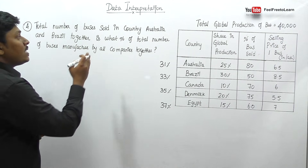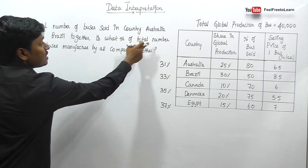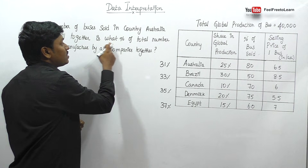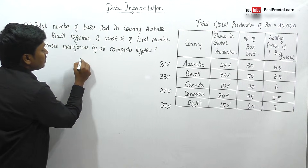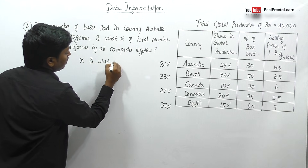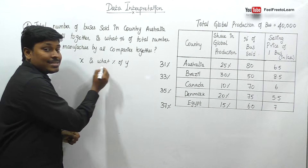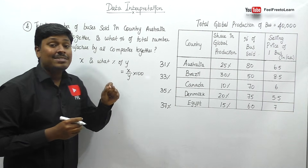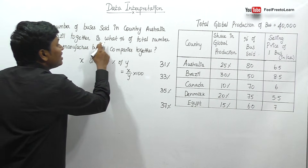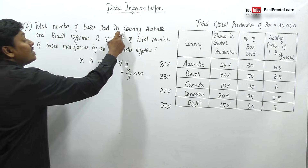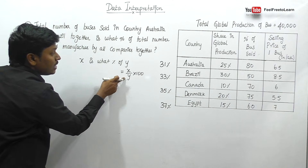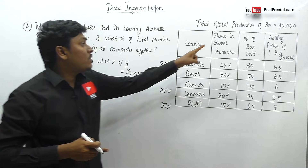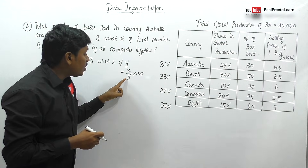Question number 4: Total number of buses sold in Australia and Brazil together is what percentage of total number of buses manufactured by all companies together? Wherever you find 'is what percentage' in a question, it is in the format: x is what percentage of y, which equals x divided by y into 100. Here, x is the total buses sold in Australia and Brazil, and y is the total buses manufactured — which is 40,000.